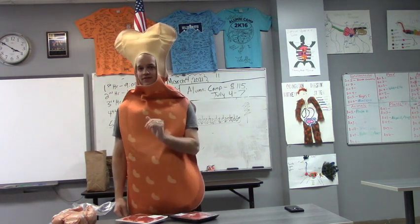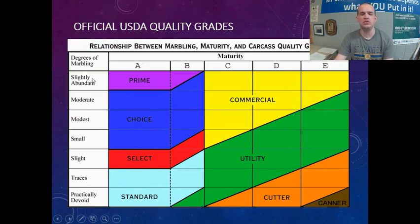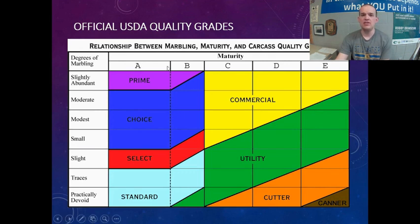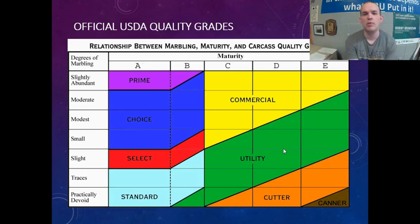We have prime, choice, and select. This chart is essentially an indicator of how we get these grades. You'll notice the degrees of marbling on the left — from slightly abundant at the top all the way down to practically devoid at the bottom. And our maturity: A maturity is a very young animal under 30 months, then B, C, D, E are older animals. Prime steaks come from animals with young A maturity and tons of marbling. Move down to choice — still young, but less marbling. Then select below that. Standard has practically devoid marbling, and commercial, utility, and cutter grades come from older animals.